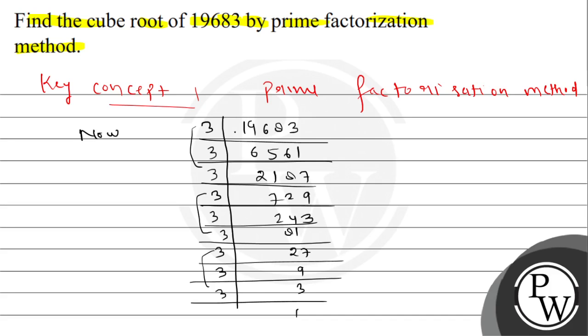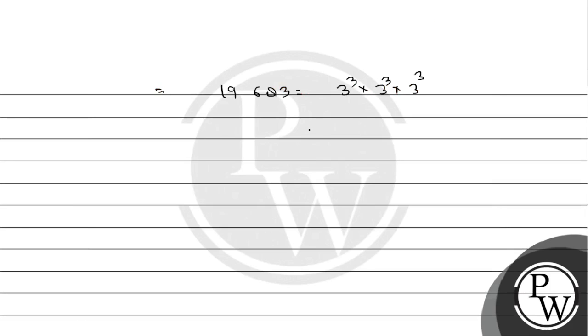Which we can write as 2 cube into 3 cube into 3 cube. See, here we have this. So the cube root of 19,683, what is our result?